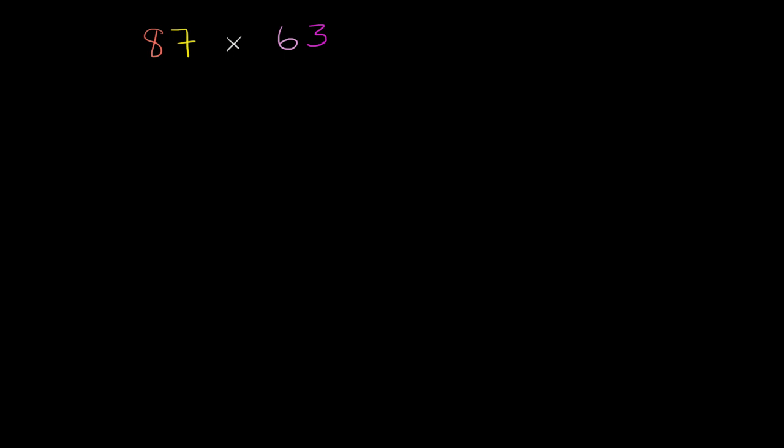So first, what I'm going to do, let me rewrite 87. So this is the same thing as 87. But instead of writing 63 like that, I'm going to write 63 as 60 plus 3. Now, what is this going to be equal to?